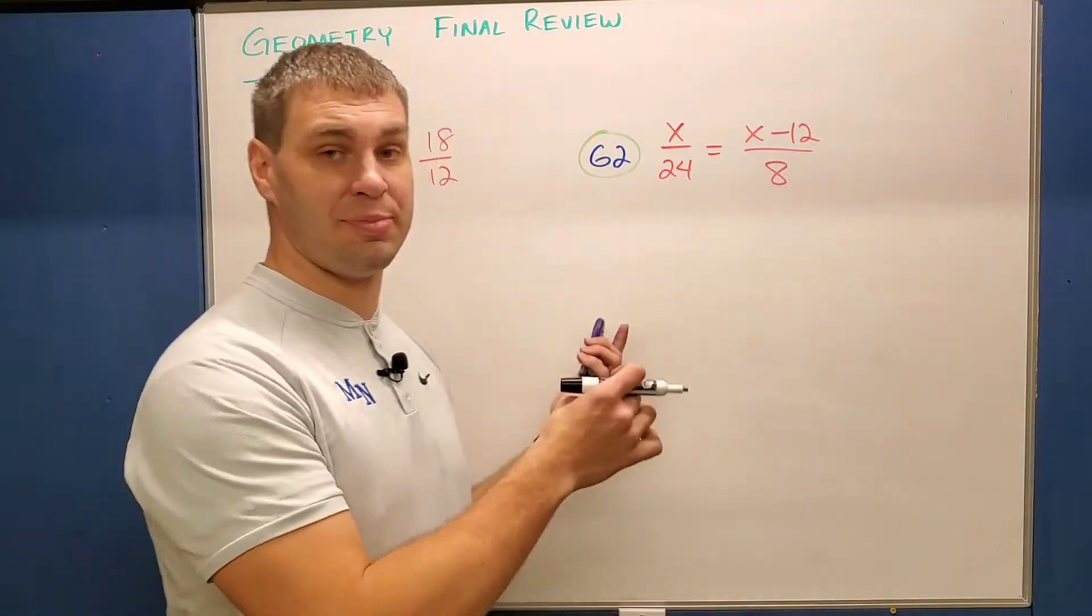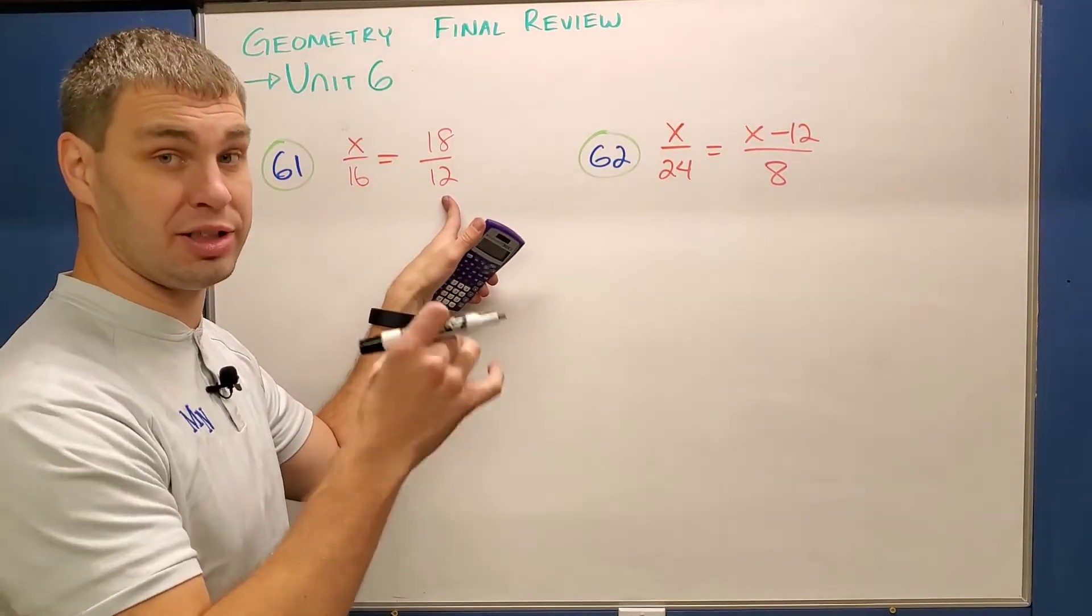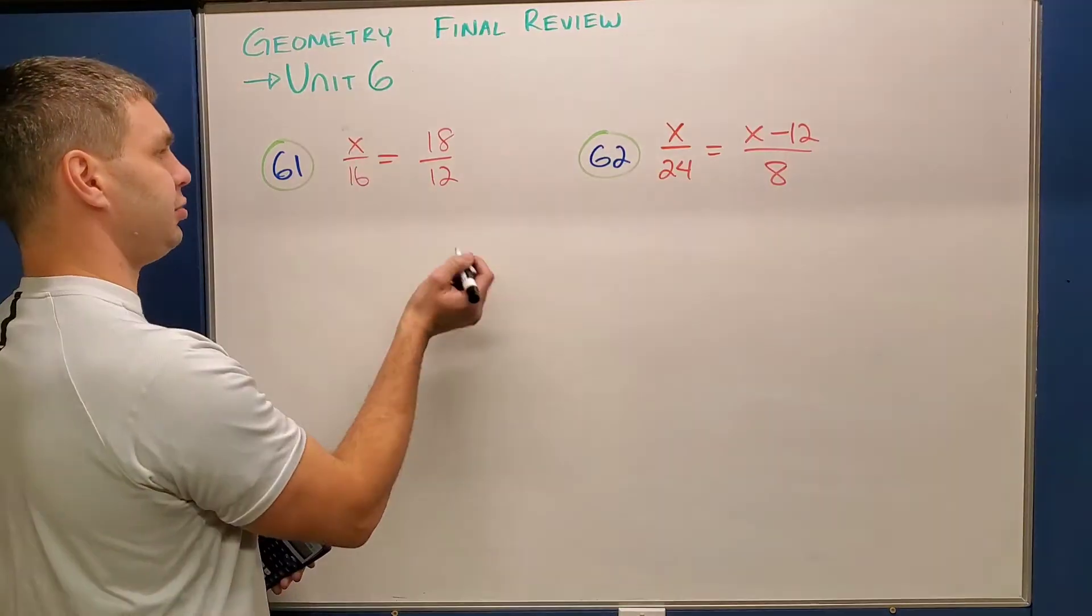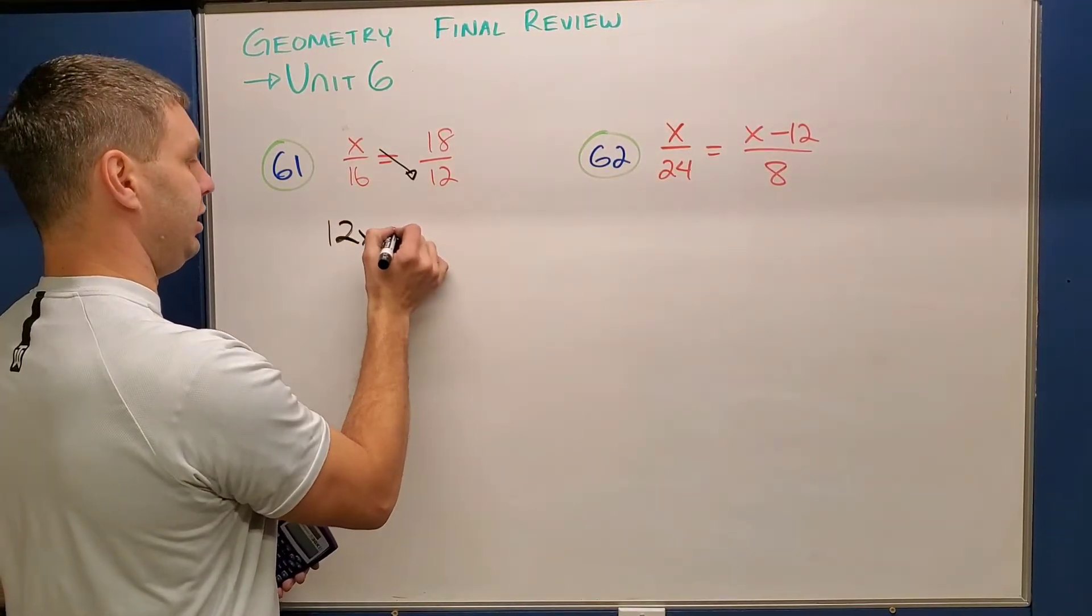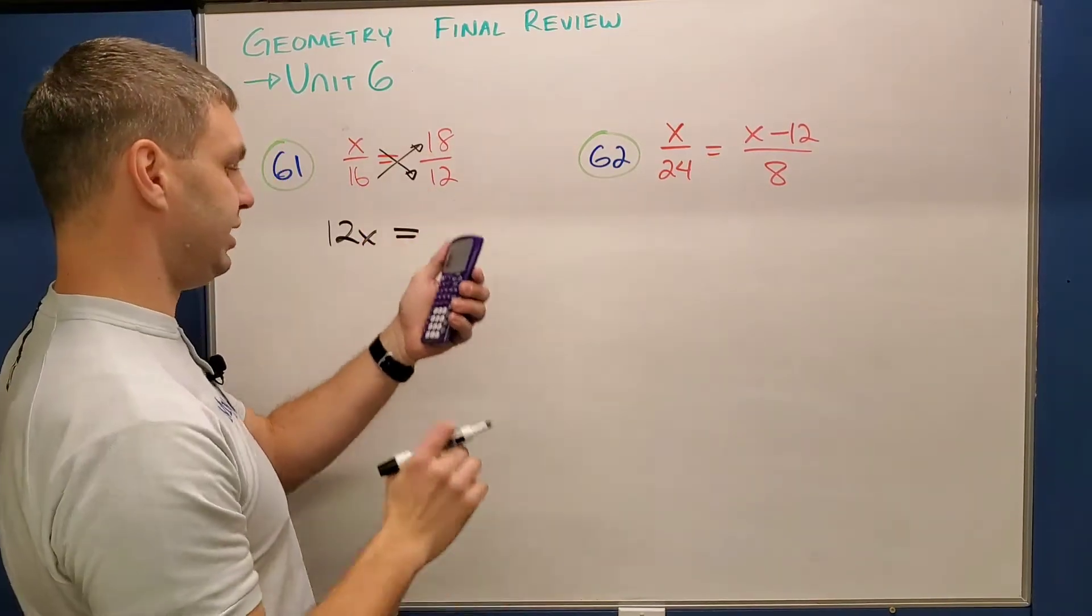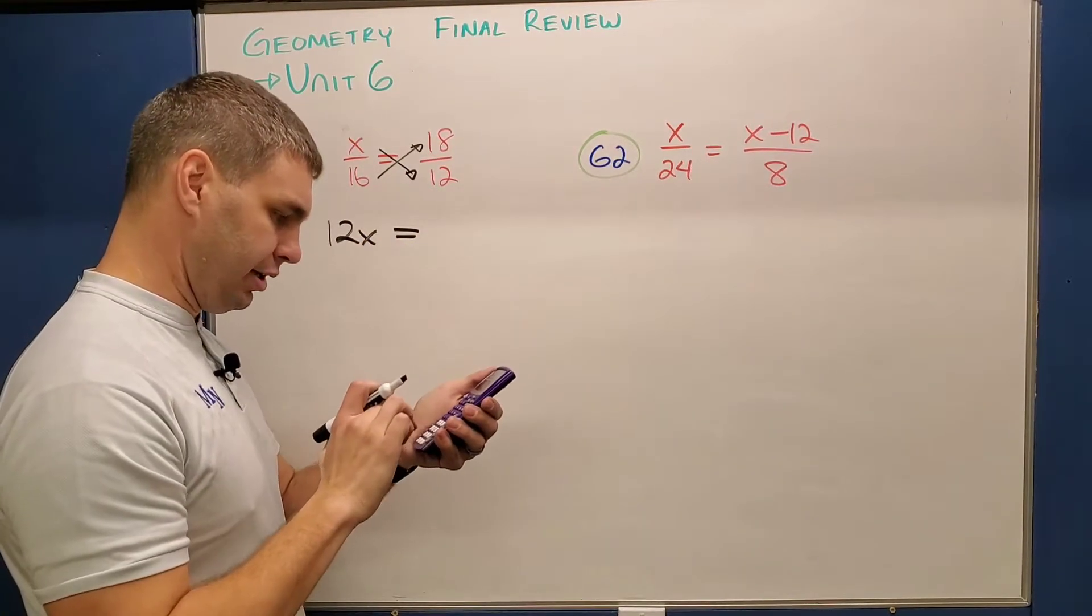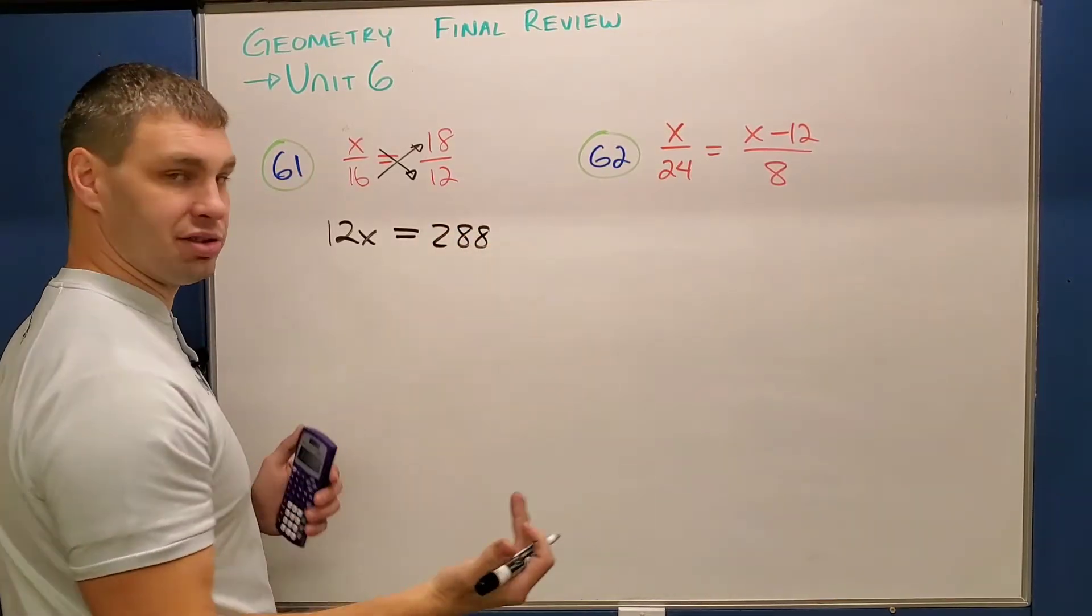Speaking of proportional, we now know how to solve proportions, which is when a fraction equals a fraction and we solve it by cross-multiplying. So on this one, if I cross-multiply this way, x times 12 is 12x, and that's going to equal the cross-multiplication of the other way, which is 16 times 18. I have no idea what that is. 288.